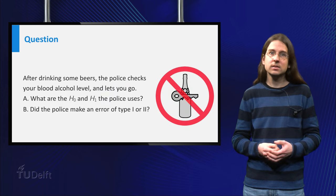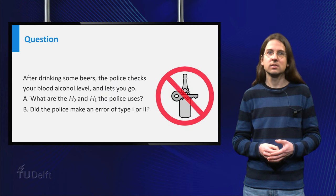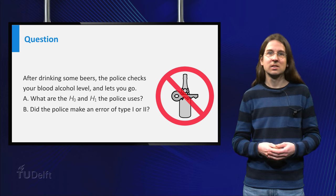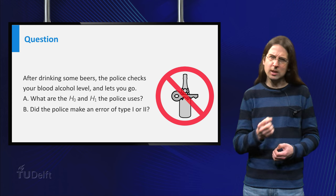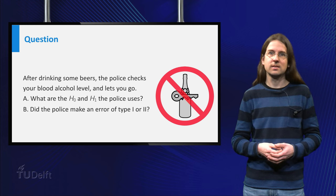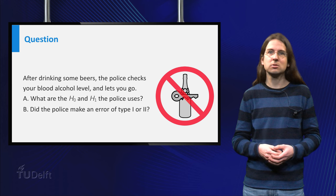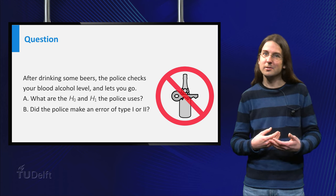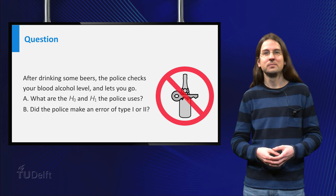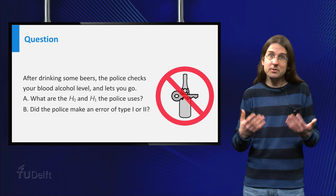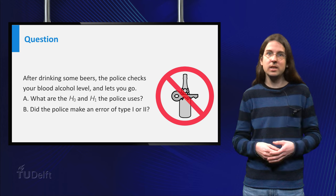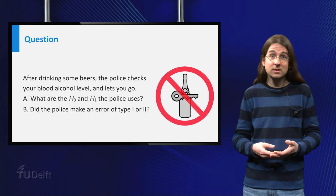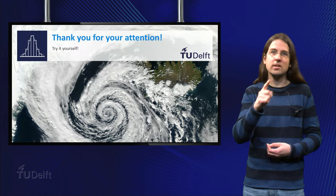Before class, you should consider the following question. Suppose you went to a party and had a few too many beers. On the way back, the police stops you for a breathalyzer test, checking whether you had too much to drink. The test shows you are fine and you can continue to drive home. What are the hypotheses H0 and H1 the police uses in this test? And what type of error did they make? See you in class.